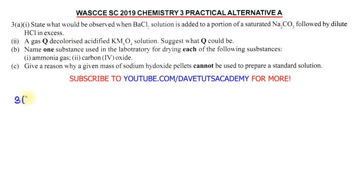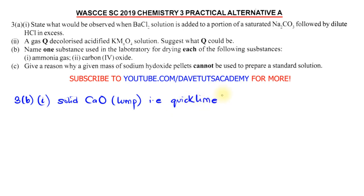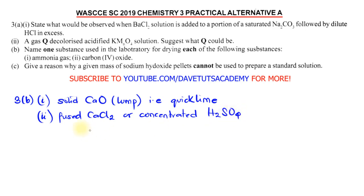In question 3B, we name one substance used in the laboratory for drying ammonia gas. To dry ammonia gas, we use solid calcium oxide, which is a lump popularly called quicklime. Ammonia cannot be dried with most other drying agents because it would react with them. To dry carbon dioxide, we use fused calcium chloride or concentrated H₂SO₄.